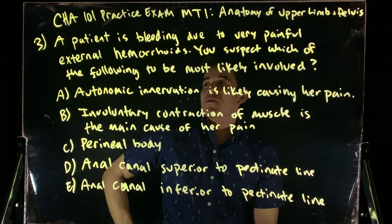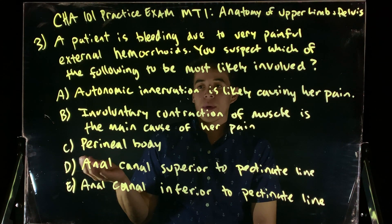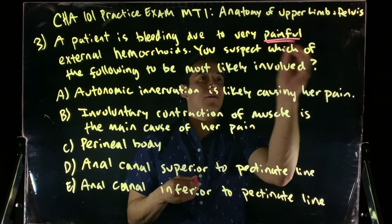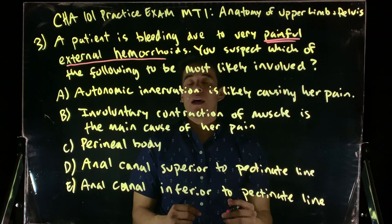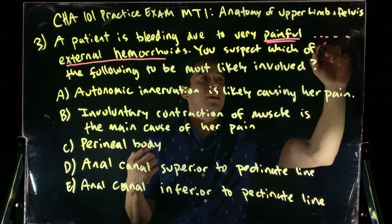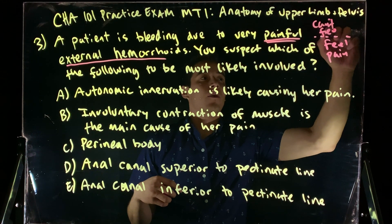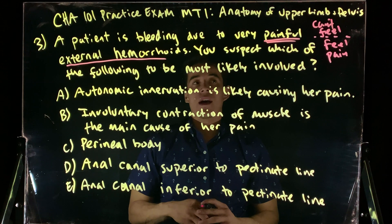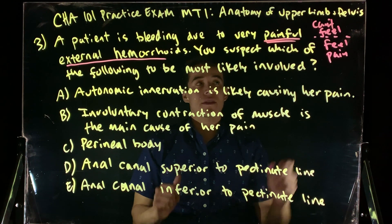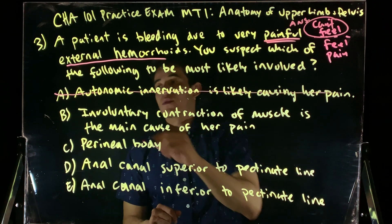A patient is bleeding from very painful external hemorrhoids. You suspect which of the following is most likely involved. Answer A says autonomic innervation is likely causing her pain — we can cross that off. Because we have painful sensation and we're dealing with external hemorrhoids, we know the pectinate line is key: below the pectinate line we can feel pain; above it we cannot. Here the pain is present, so it involves the somatic nervous system, not autonomic. So it's not A.